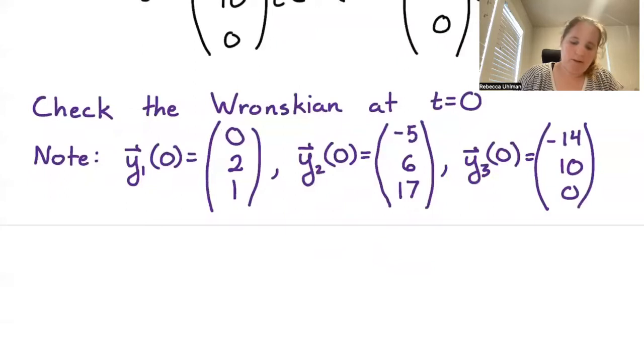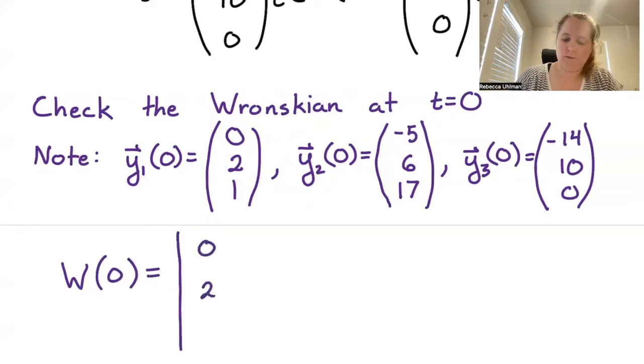We have the Wronskian at 0 as just the determinant of: we put Y1 in our first column 0, 2, 1, Y2 in our second column negative 5, 6, 17, Y3 in our third column negative 14, 10, and 0.